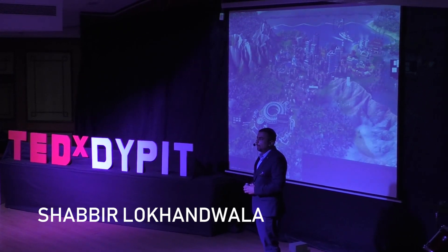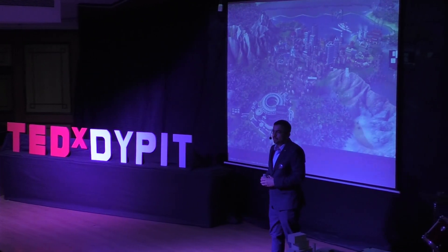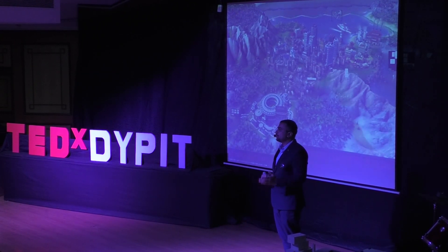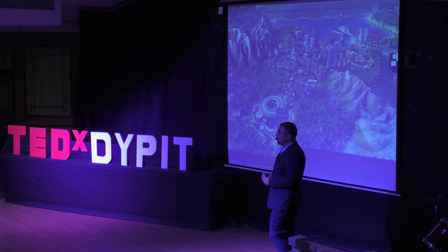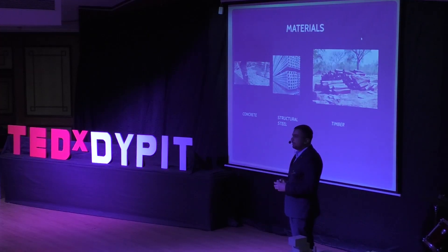I am going to brief you today about how we have been building structures in this entire era. I will be taking you through the entire course of centuries and how we have evolved as structural engineers. As humans, we have found three common materials which have helped us to build our entire civilization — amphitheaters, auditoriums, stadiums, residential apartments and commercial buildings. Those three materials are steel, timber, and later on, concrete.